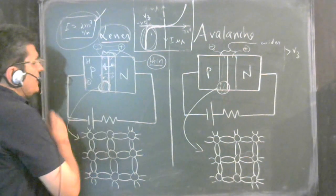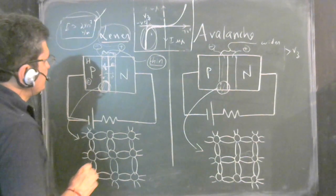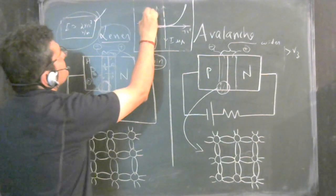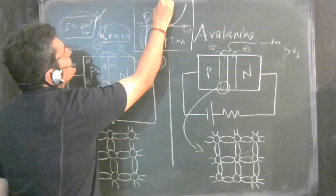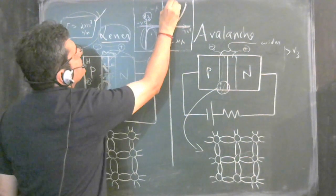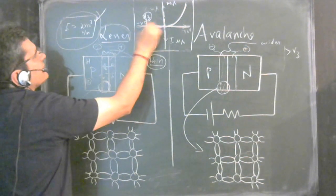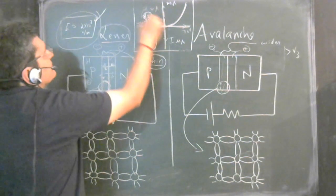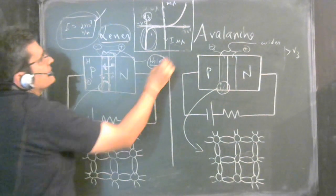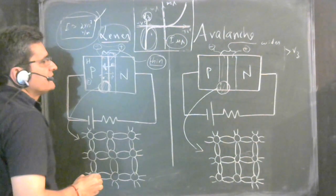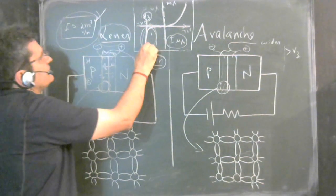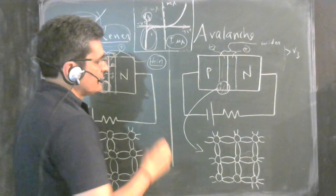When the Zener diode is operated in a voltage region greater than Vz, the breakdown voltage, we see the following characteristics: in the forward bias, current is in milliamperes. When you apply the reverse bias beyond a certain negative Vz, you get a very sharp increase in current. The reverse current is in microamperes because it is due to minority carriers, but it increases very sharply.